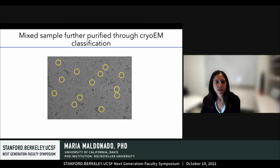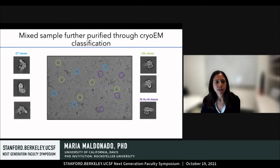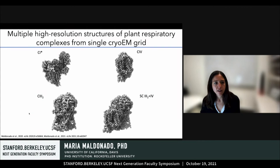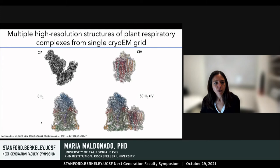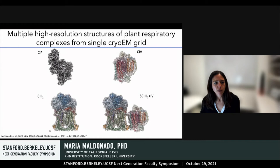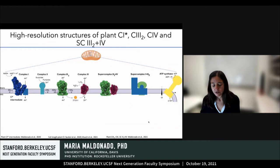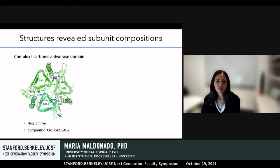In practice, each of the cryo-EM micrographs contains particles highlighted in yellow, but these particles are a mix of all the respiratory complexes. We use computational algorithms to separate the particles into different subsets corresponding to the different complexes of interest. Using this strategy, we obtained high-resolution structures for several respiratory complexes from one single grid — including reconstructions and models for a complex one assembly intermediate called complex one star, the complex three dimer, complex four, and the super complex assembly between complex three and complex four.